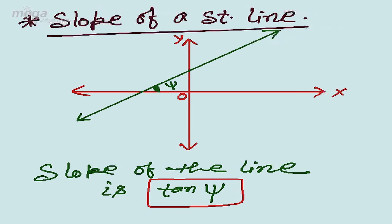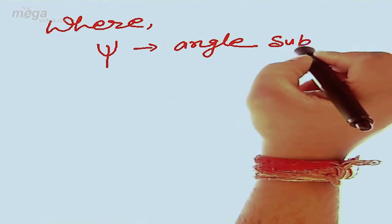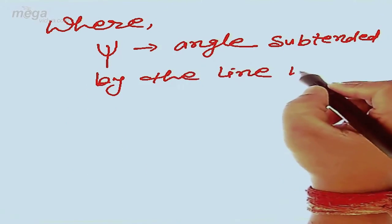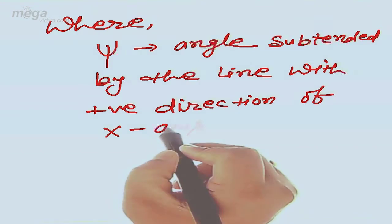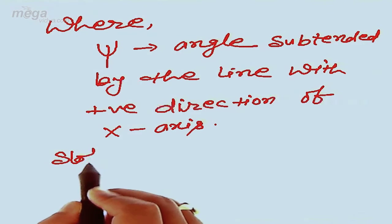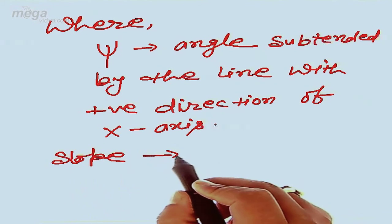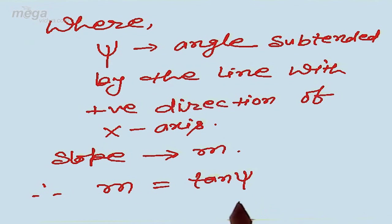So students, the slope can be defined as: the slope of a straight line is the tangent of the angle subtended by the line with the positive direction of the x-axis. Here, ψ is the angle subtended by the line with the positive direction of the x-axis, and slope is denoted by m. Therefore, m = tan(ψ).